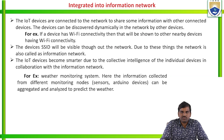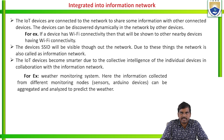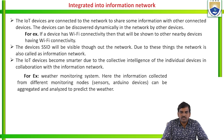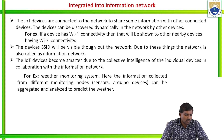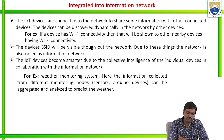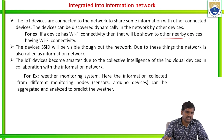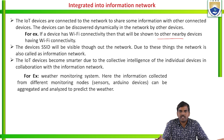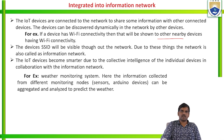Integrated into information network: for example, in a weather monitoring system, information collected from different monitoring nodes can be aggregated and analyzed to predict the weather condition. To predict the weather condition, we use a weather monitoring system along with other devices. If a device has Wi-Fi connectivity, it will be shown to other nearby devices having Wi-Fi connectivity. That is the main idea of integrated into information network, one of the characteristics of IoT.